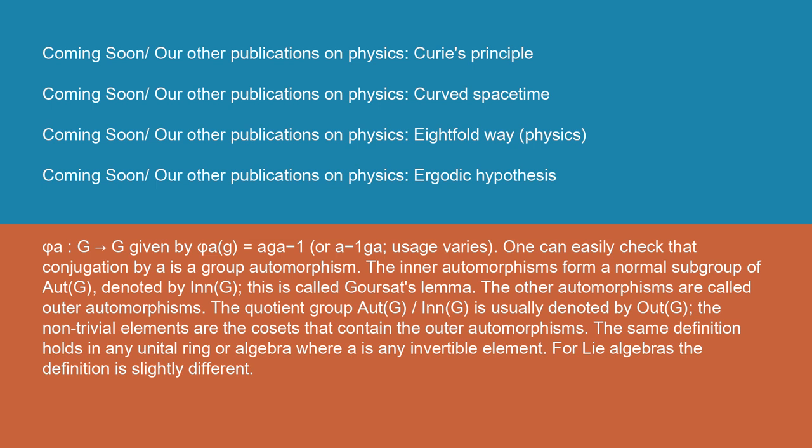The other automorphisms are called outer automorphisms. The quotient group Aut(G)/Inn(G) is usually denoted by Out(G). The non-trivial elements are the cosets that contain the outer automorphisms. The same definition holds in any unital ring or algebra, where a is any invertible element. For Lie algebras, the definition is slightly different.